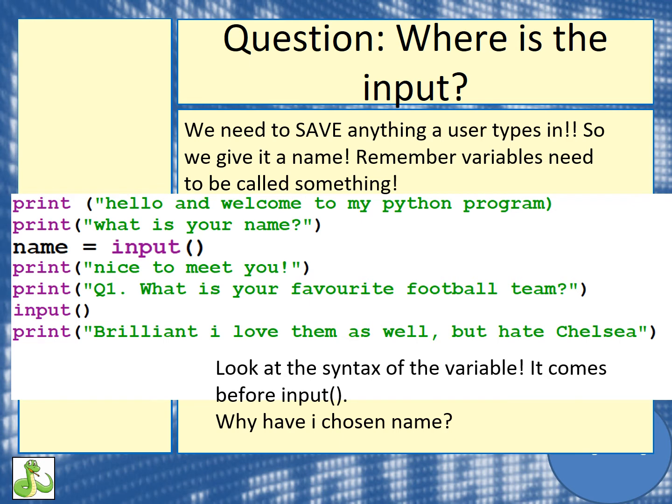We do this by giving it a variable. In this instance I've called it name. We put that before our input, so: name equals input. That means that in memory, in our RAM, there's a little area called name where whatever the user types in will be stored. And that means we can get it back. Remember when we're playing a game, we might be halfway through and we save our progress — that's stored in a variable inside our RAM.